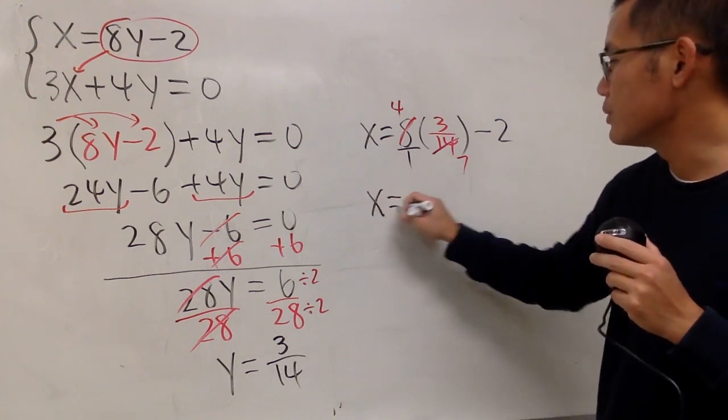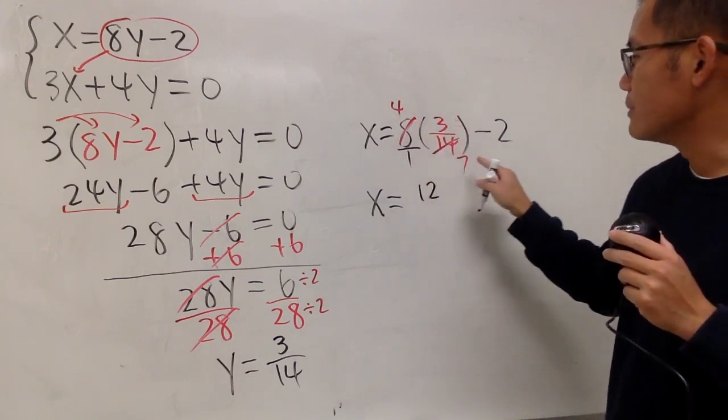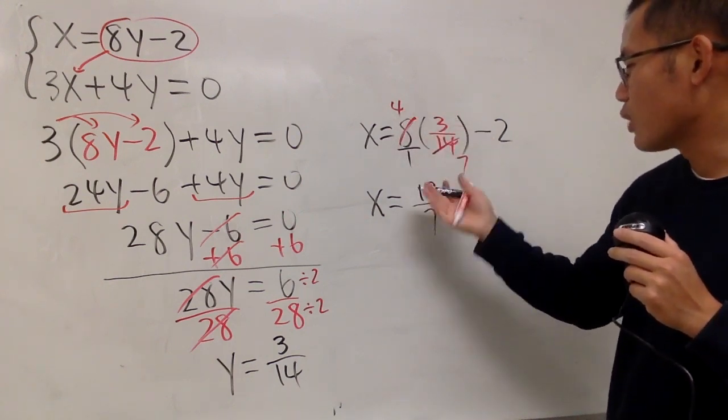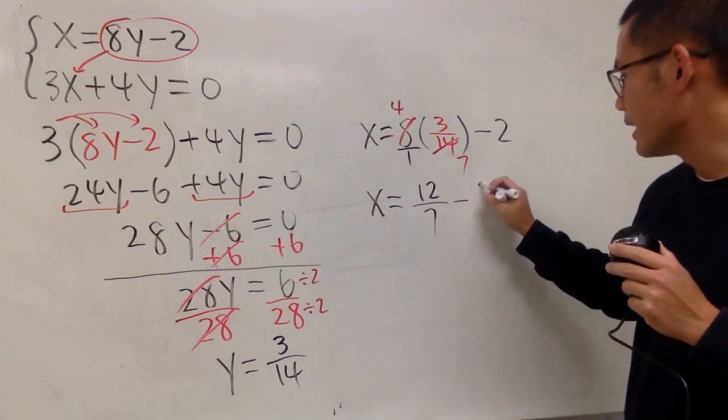And finally, x is equal to... You see, 4 times 3 is 12. 1 times 7 is 7. So, we have 12 over 7. But we still have to minus the 2, like this.